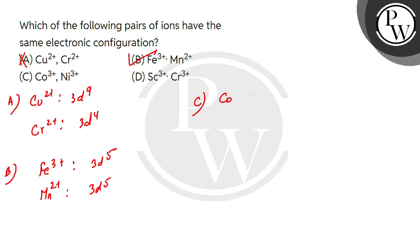In C, let's see. Cobalt configuration is 3d⁷ 4s². So cobalt 3 positive will be 3d⁶. Similarly, nickel configuration is 3d⁸ 4s². So nickel 3 positive will be 3d⁷. That means option C is also ruled out because the configuration is different.